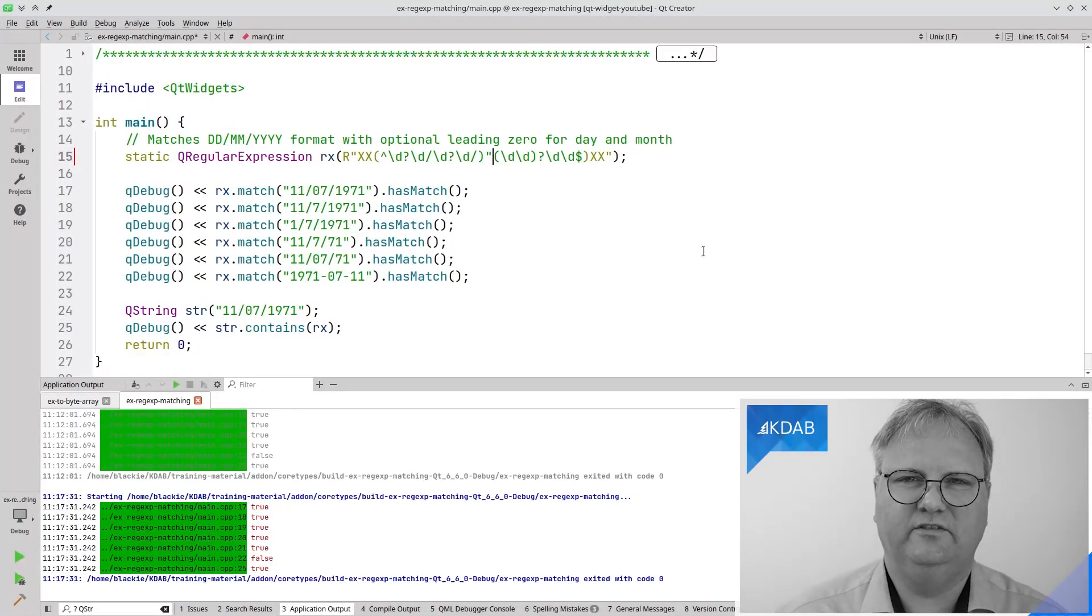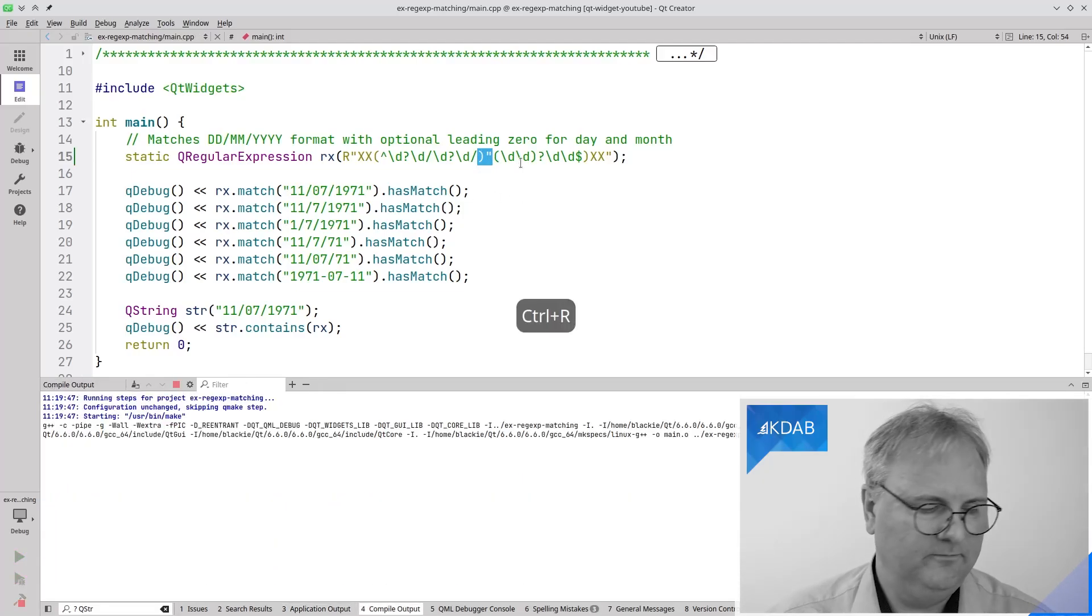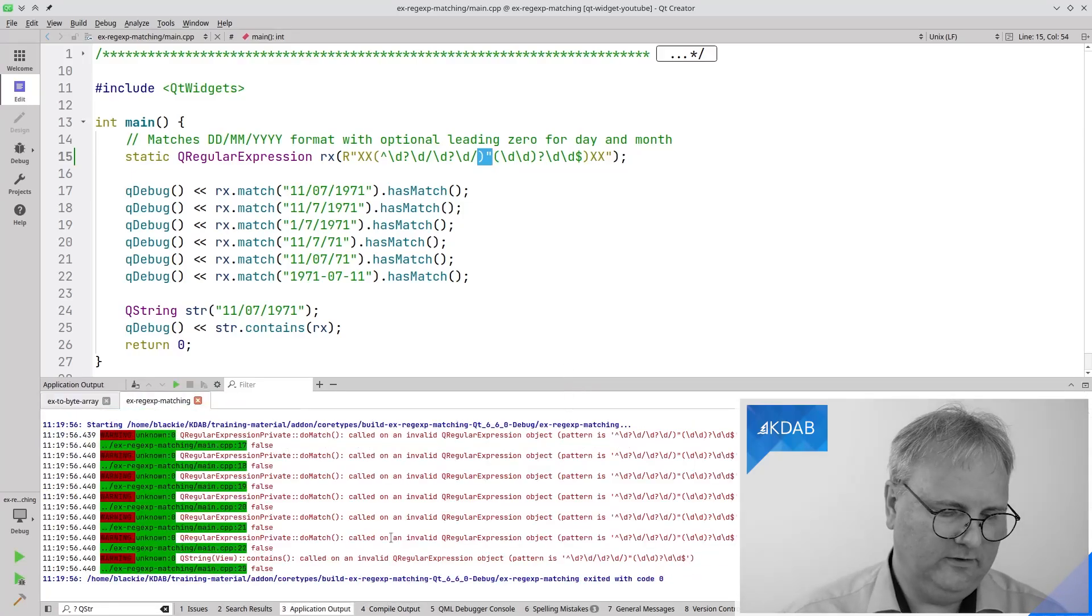Clazy will tell me, "Hey, you should likely make this into a static to avoid every time you get into this function." Main, yeah, right. I only get inside once, but it could have been part of a tight loop somewhere where I was comparing a regular expression with a string, and I would not want to have to recompile it all the time.